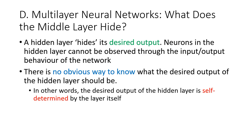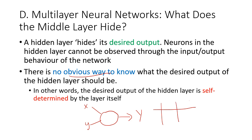A hidden layer hides its desired output. Neurons in the hidden layers cannot be observed through the input or output behavior of the network. There is no obvious way to know what the desired output of the hidden layer should be. To contrast with a single perceptron — a single perceptron might have two inputs x and y and one output Y. If you have a truth label for an AND operation and the input is both zero, the output should be zero. However, for hidden layers, the desired output is not known to us — it is self-determined by the layer itself.